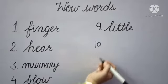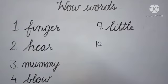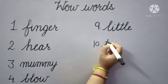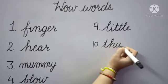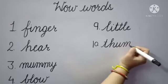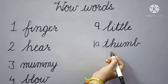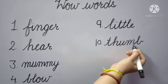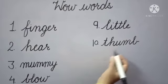Next, number 10: 'thumb'. What is the spelling of thumb? T-H-U-M-B, thumb. Thumb means 'angootha' (thumb).